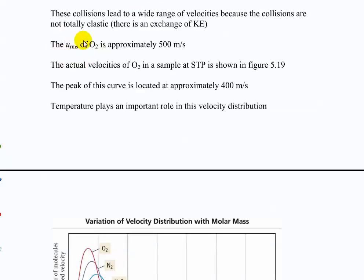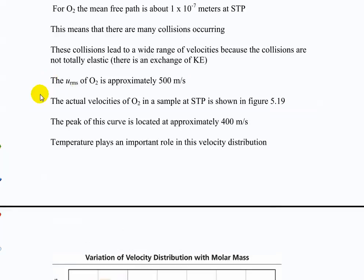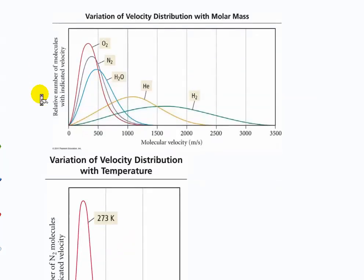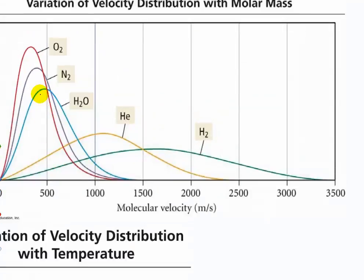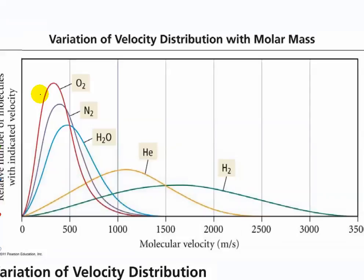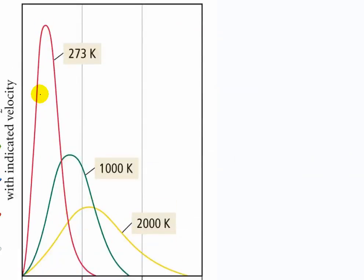We calculated the RMS velocity — the average velocity — but actual velocities vary quite a bit. Based on temperature, we can plot a distribution. Here is the variation of velocity distribution with molar mass. As something gets very light, its range of molecular velocities becomes much larger. As something gets much heavier, not only does it slow down, but it also has a smaller distribution. This will also change with temperature.